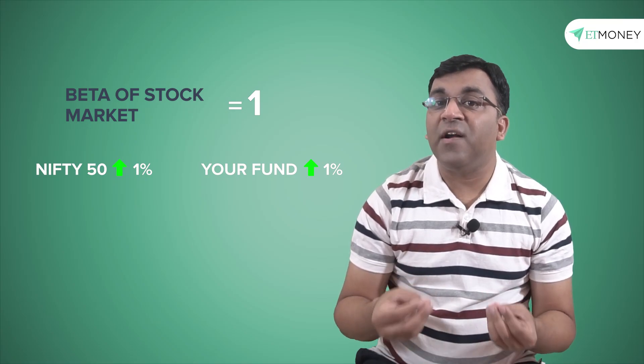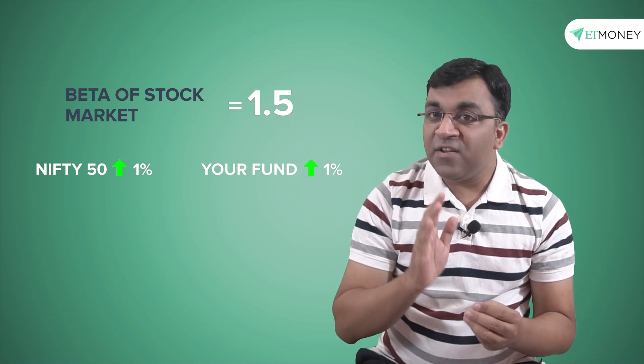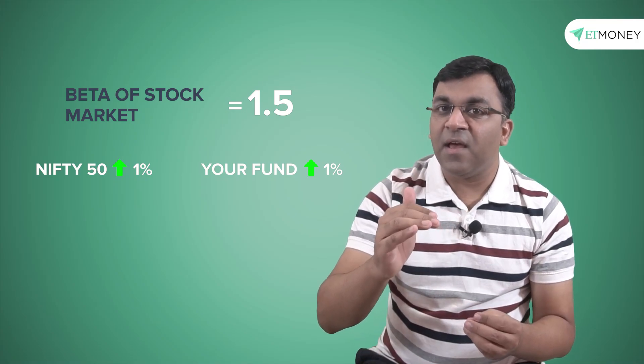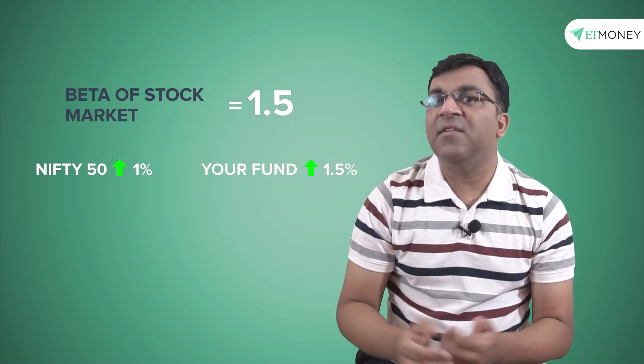Likewise, if the beta of your fund is higher than 1, say it's 1.5, then if the nifty jumps by 1%, your fund is likely to go up by 1.5%. And a similar pattern is followed in cases where the beta is lower than 1.